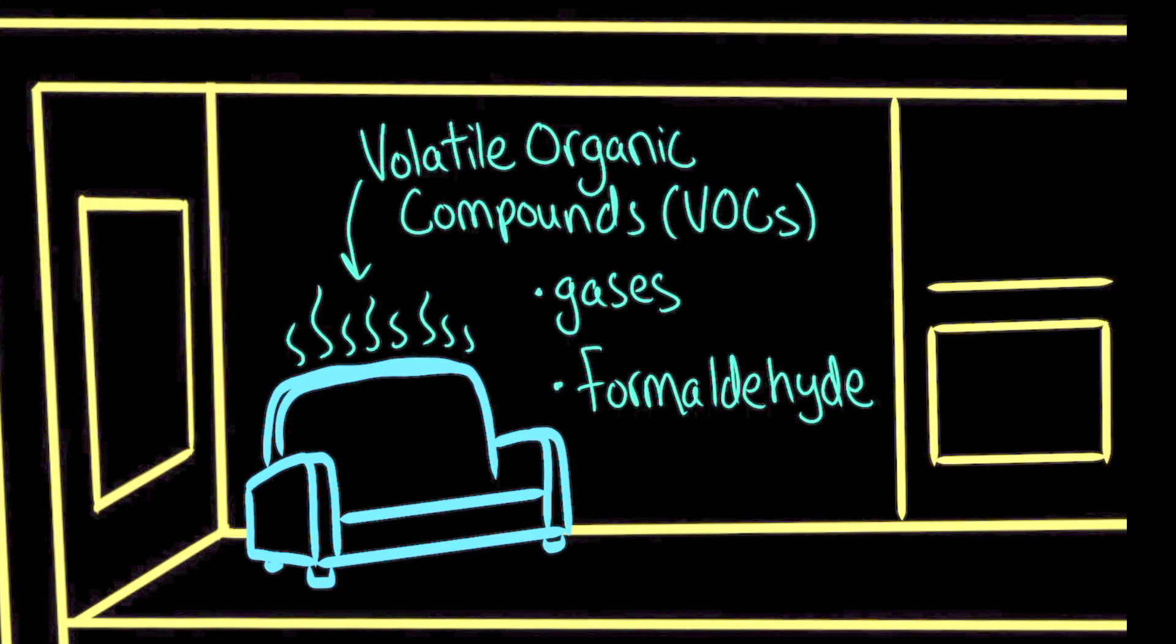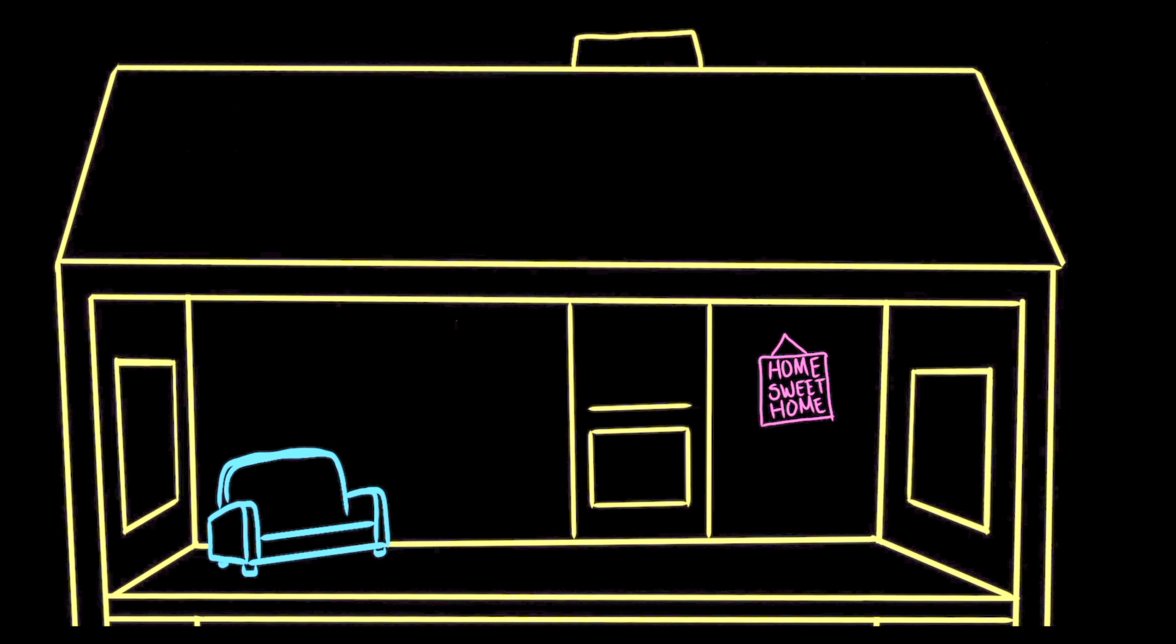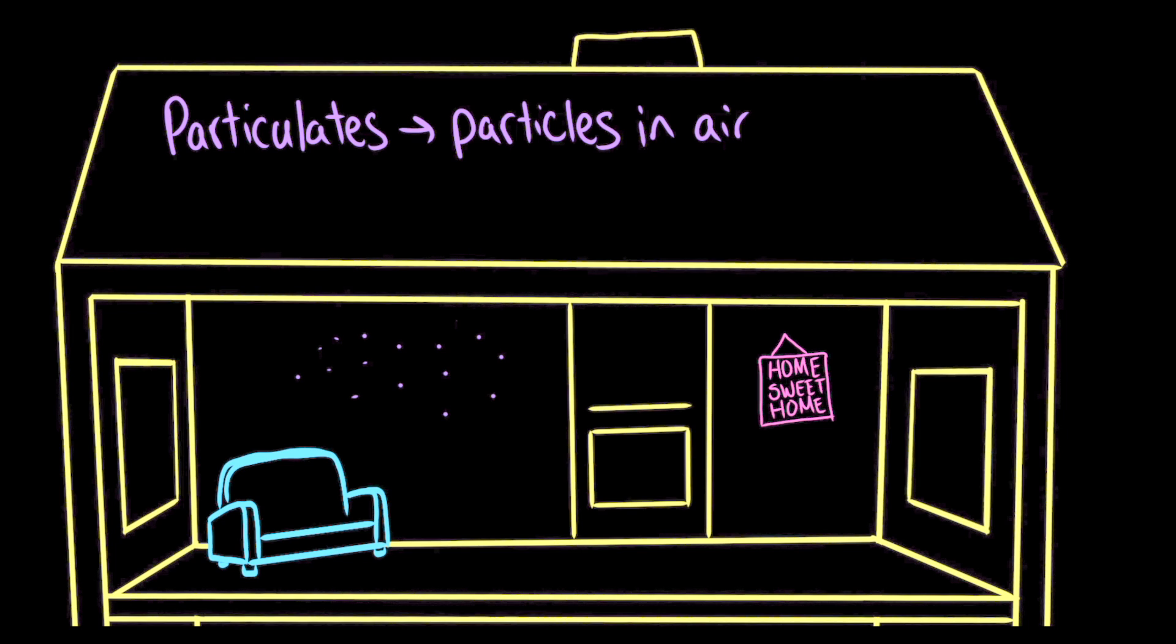Indoor air pollutants can also come from Ava's house itself, in the form of particulates, which are teeny tiny particles, so small that they can stay suspended in the air. And they can be really dangerous, because they can travel deep into the lungs and damage cells. One such particulate is asbestos.